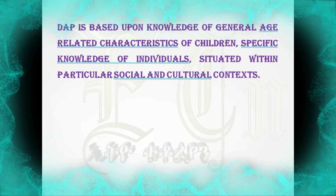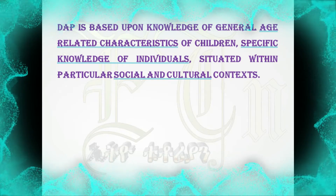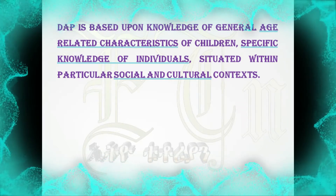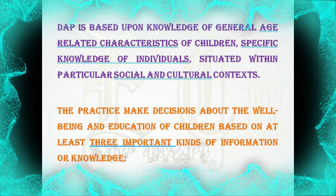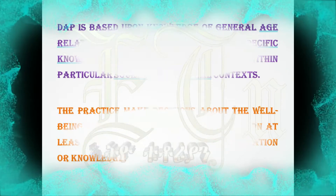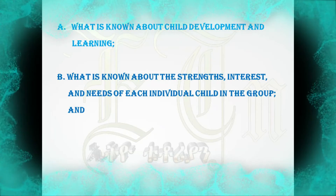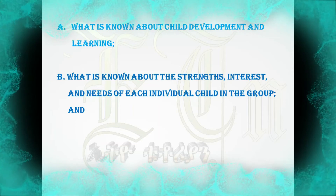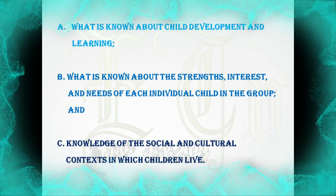The practice makes decisions about the well-being and education of children based on at least three important kinds of information or knowledge: (a) what is known about child development and learning, (b) what is known about the strengths, interests, and needs of each individual child in the group, and (c) knowledge of the social and cultural contexts in which children live.